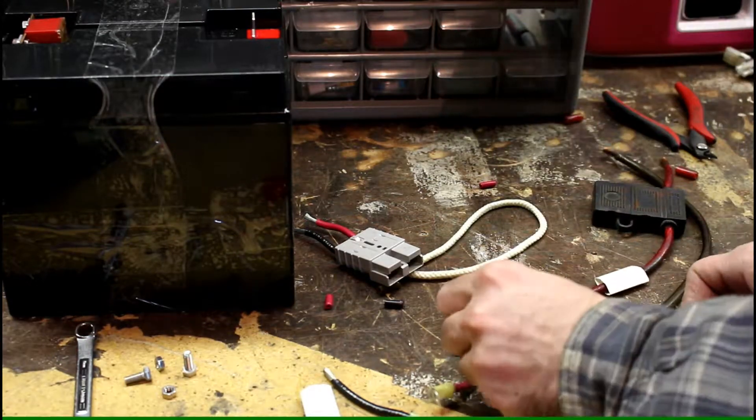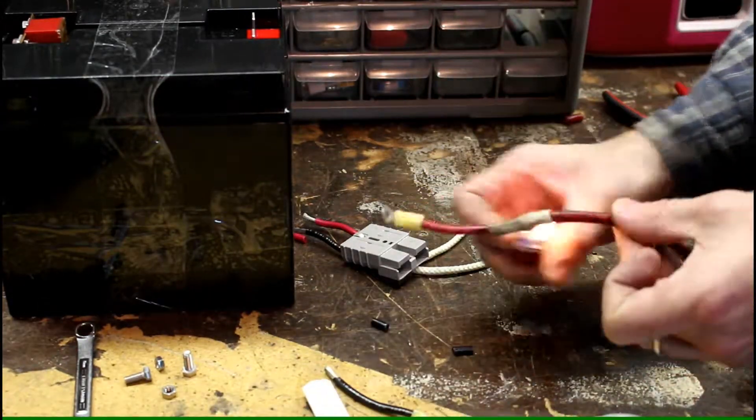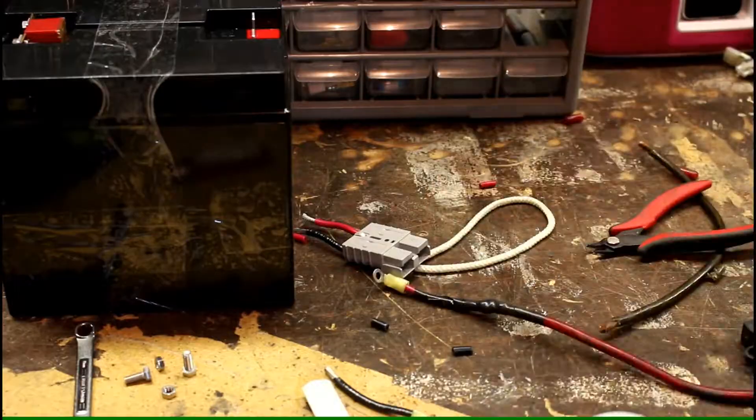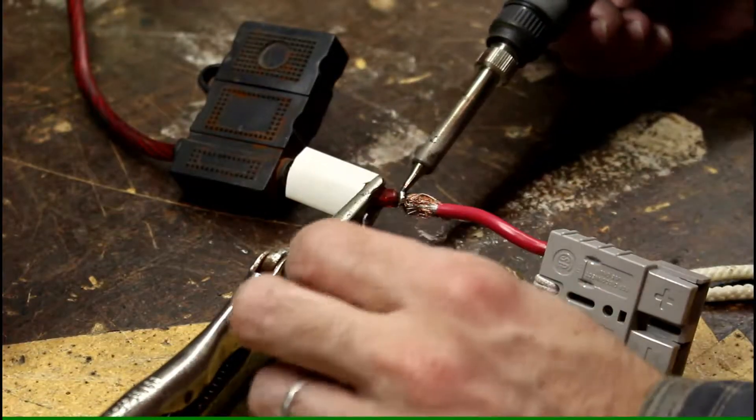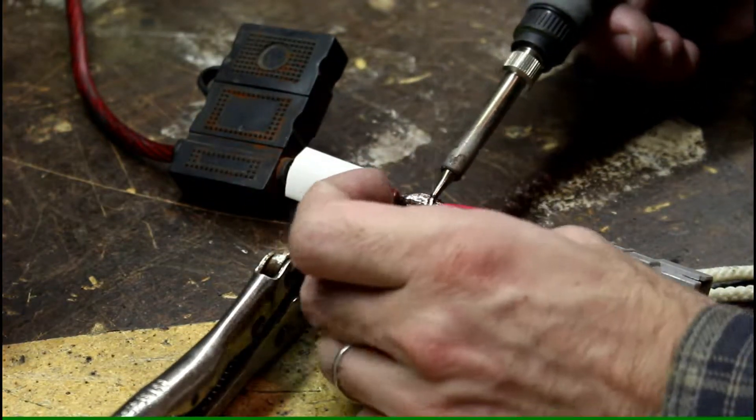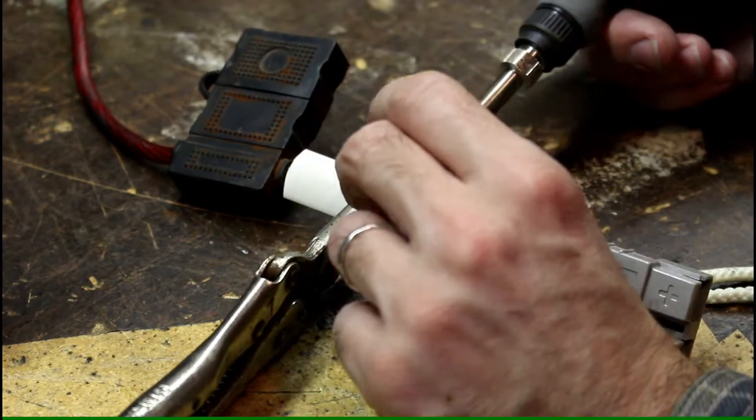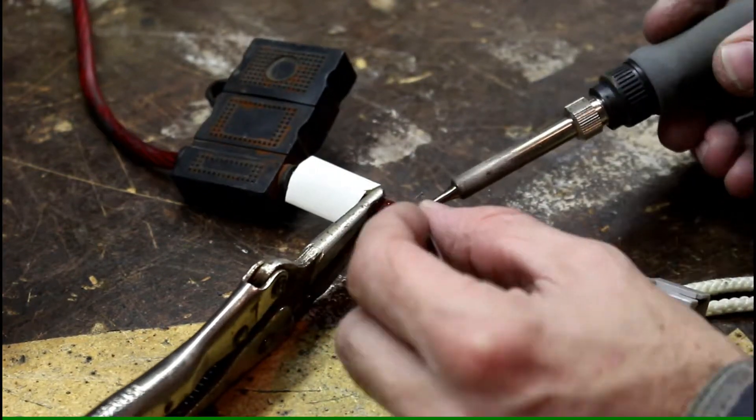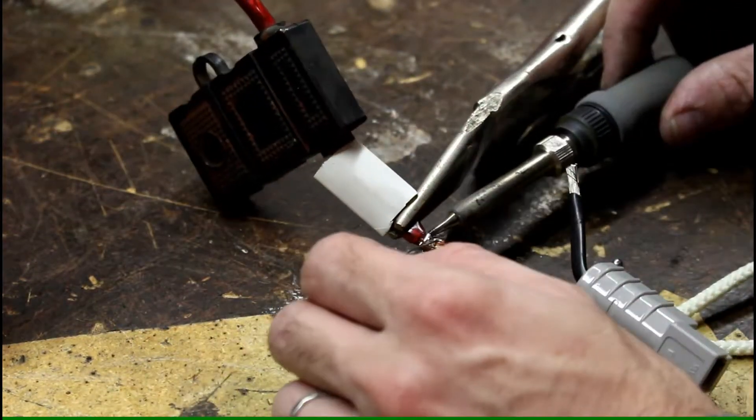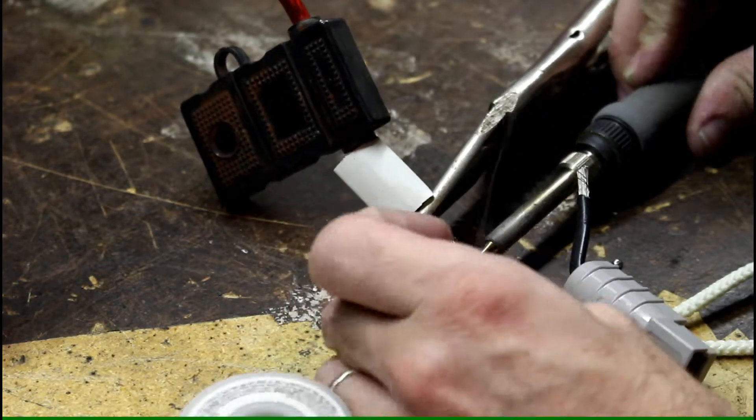I like to solder my electrical connections and then apply heat shrink. Here I'm using a pair of vise grips to absorb the heat from me soldering, to prevent the heat shrink from shrinking before I can put it over my soldered connection.